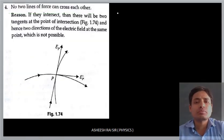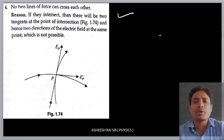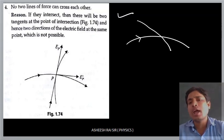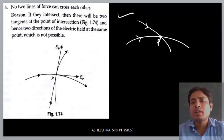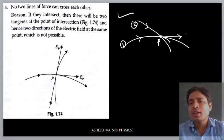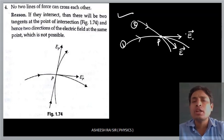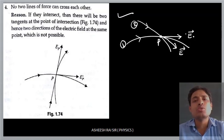The fourth property: no two lines of force can cross each other. This is a very important property. Suppose there are two electric field lines — they will never cross each other. But if they were to cross at point P, we could draw two tangents corresponding to each curve — curve 1 and curve 2. This would represent two directions of the electric field at one point, which is not possible. That is why two electric field lines will never cross each other.